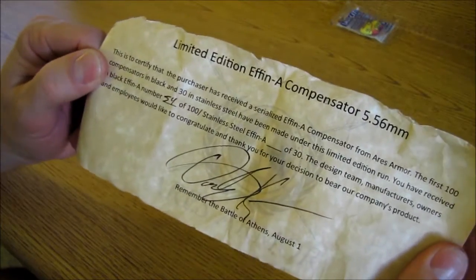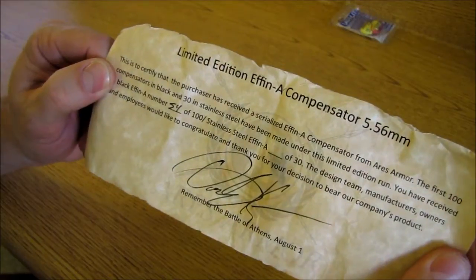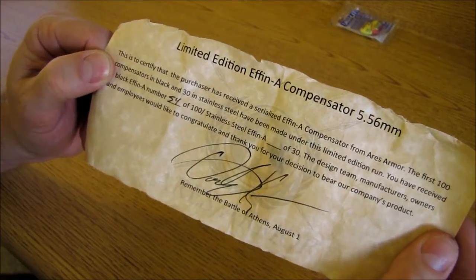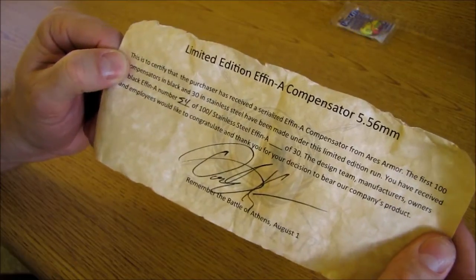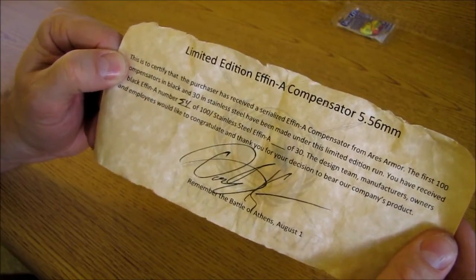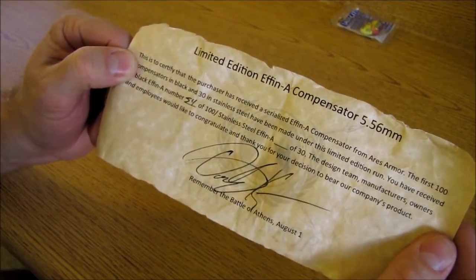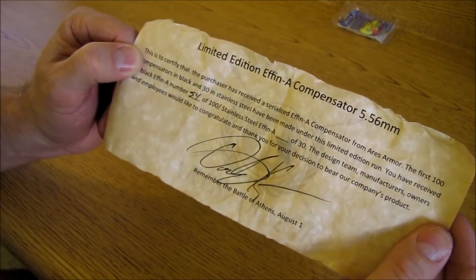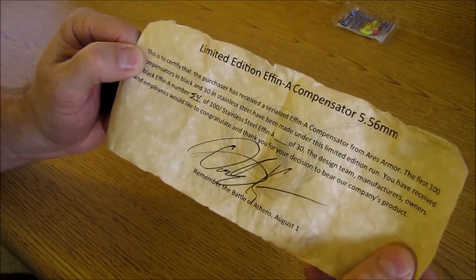It says limited edition F&A compensator, 5.56mm. This is to certify that the purchaser received a real one. This is number 54 of 100. There was 100 of these made in the initial first run and 30 in stainless. Mine is the carbon steel style that is blued.